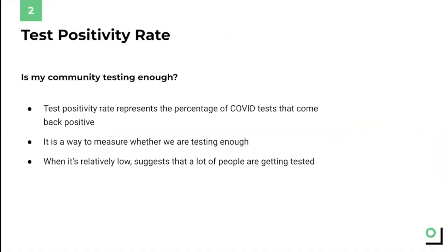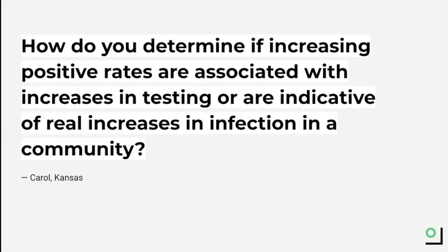Metric 2 of 4 is test positivity rate. Note that this is different from the absolute number of positive tests. Rather, what we are looking at here is the percentage of tests that come back positive. Why we really care about the test positivity rate is because it's a really good indicator of whether there's widespread testing going on in a given community.